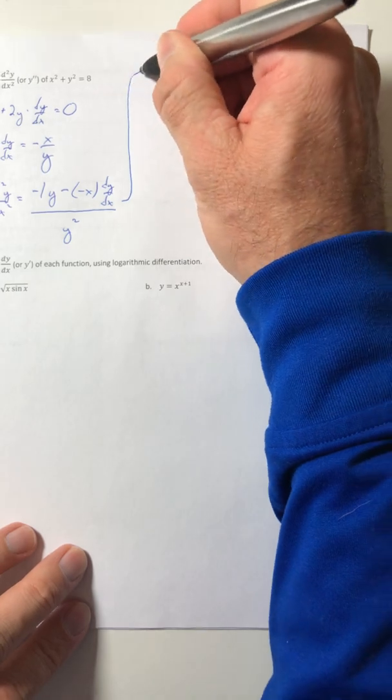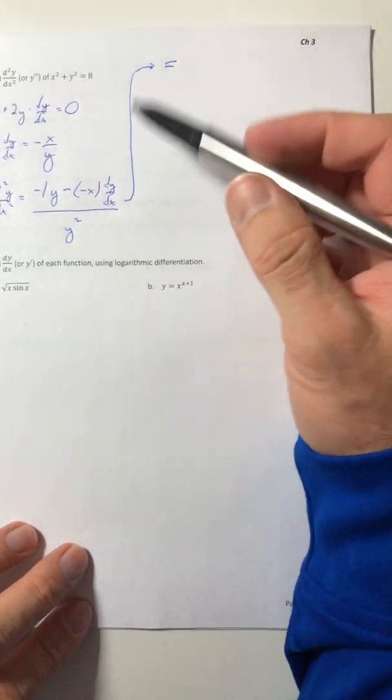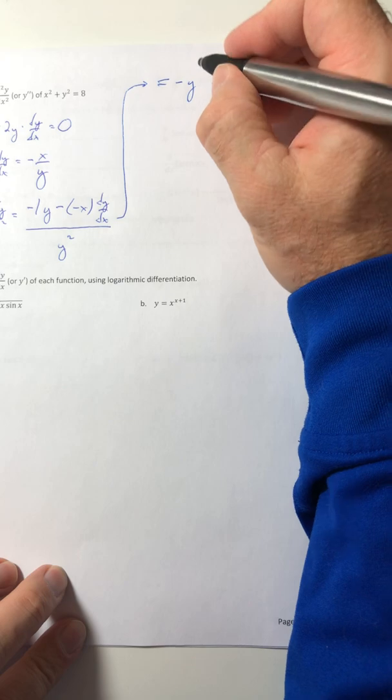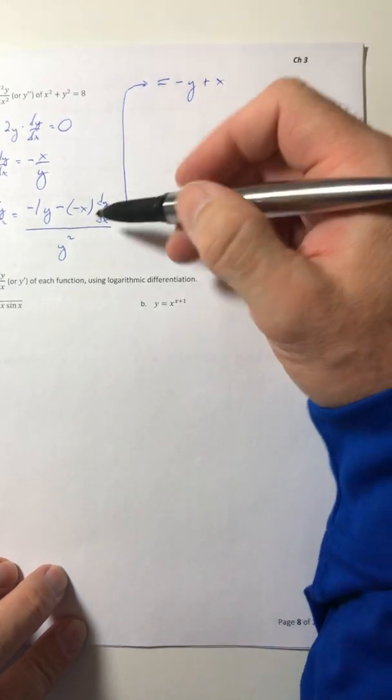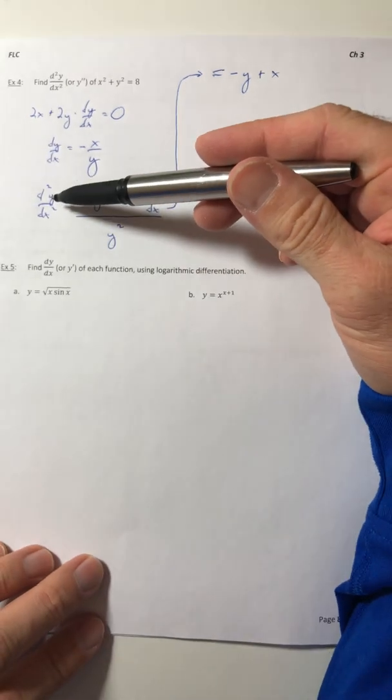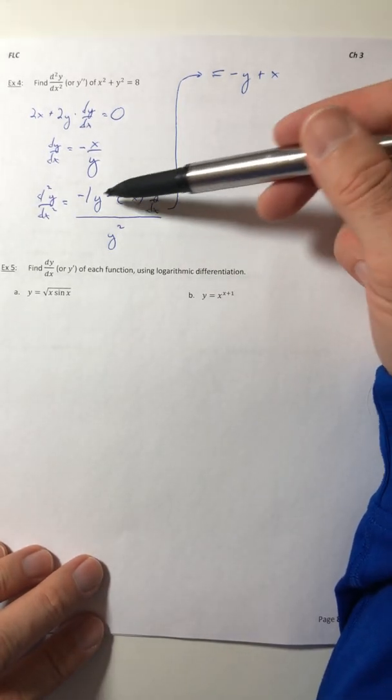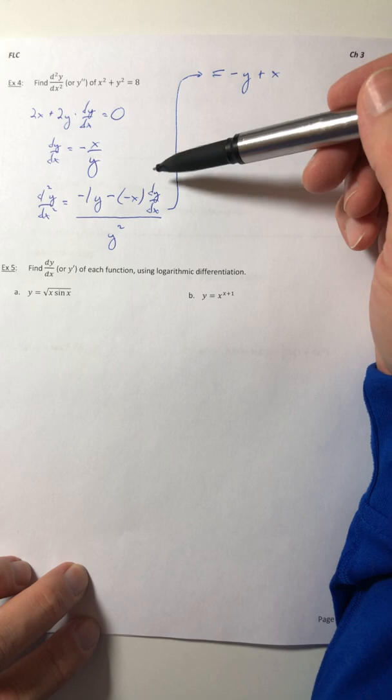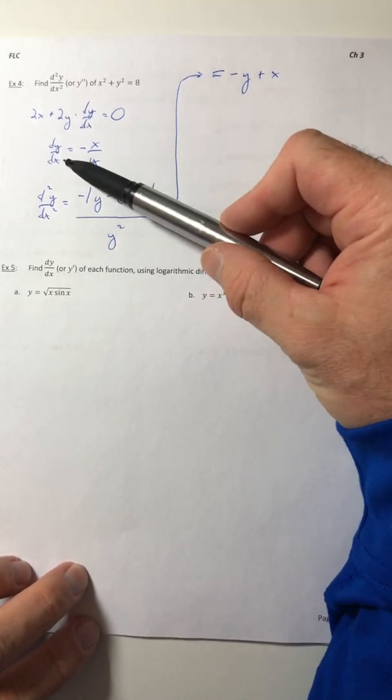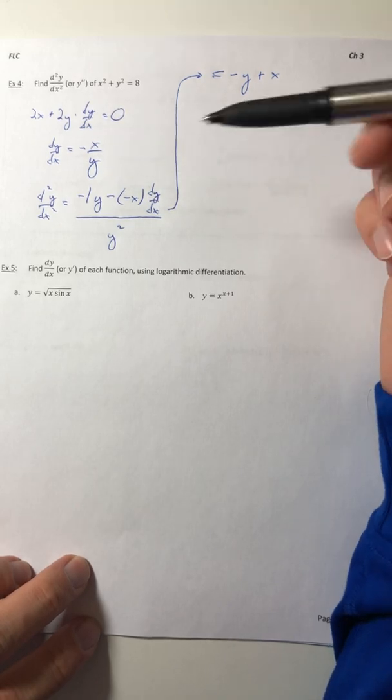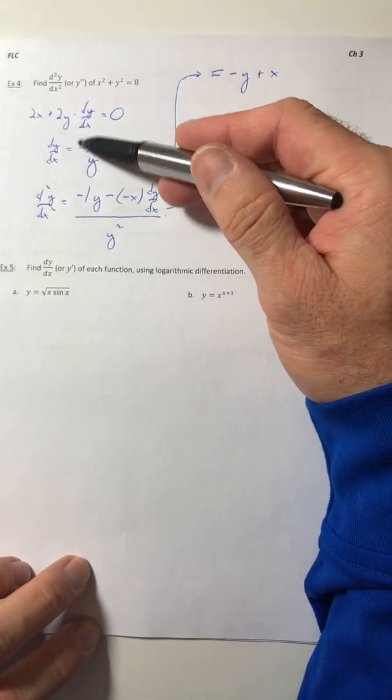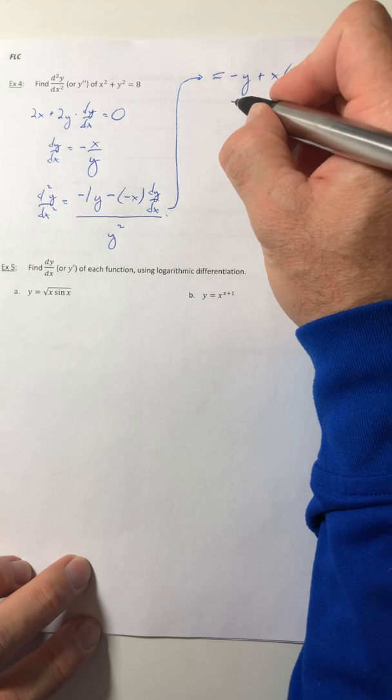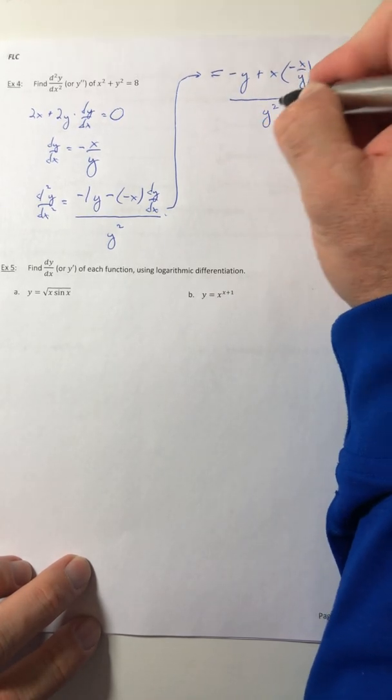So we need to simplify that out. We have negative y, the minus and the minus become a positive. And then the dy dx, we don't want to have the second derivative in terms of the first derivative. In terms of x and y are fine, but you don't want embedded derivatives in there. So we need to substitute it out. I can do that because I know what dy dx actually equals, equals negative x over y. So this dy dx, I'm going to replace it with negative x all over y.